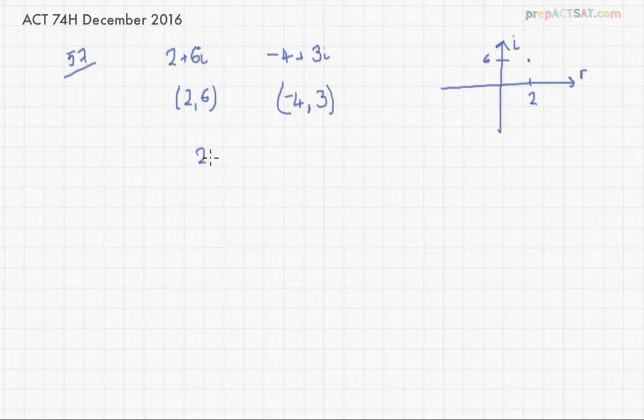So let's just do this quickly. 2 minus negative 4 squared plus 6 minus 3 squared. Square root of that. So that's 6, so that's 36 plus 9. 36 plus 9 is 45. Now look at the form of your answers.